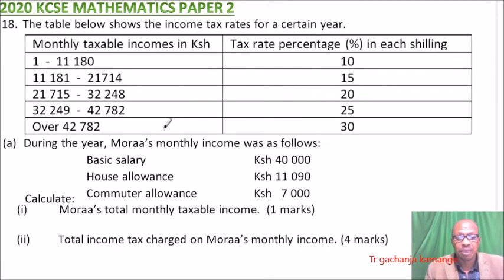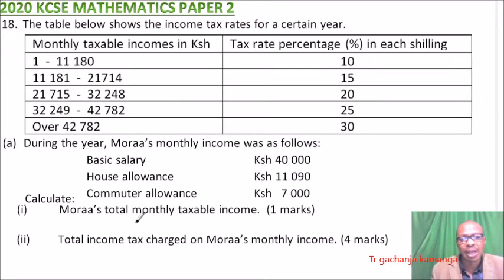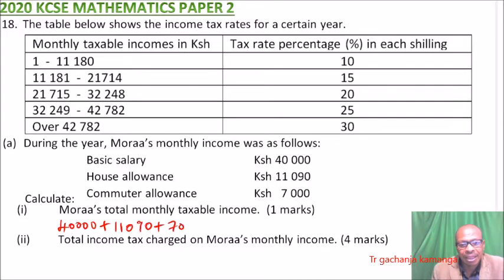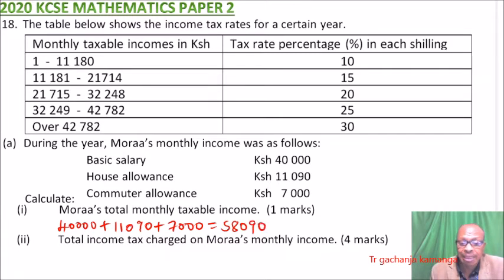Starting with Part A: calculate Morales' total monthly taxable income. You add all the earnings — basic salary of 40,000, plus house allowance of 11,090, plus commuter allowance of 7,000. Using your calculator, you get 58,090. That is the total taxable income.